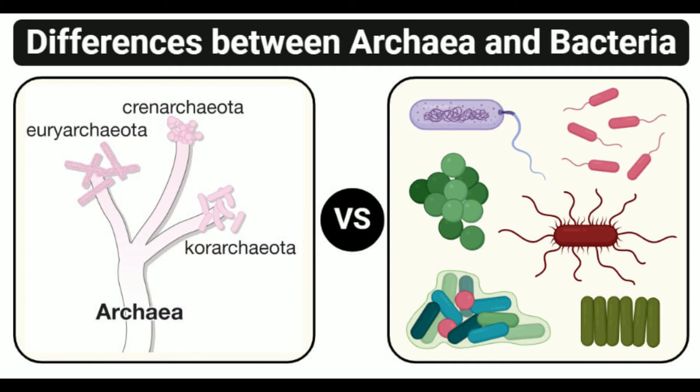RNA polymerase: RNA polymerase in archaea is complex, with more than eight polypeptides, and they may even have multiple RNA polymerases. Bacterial RNA polymerase is simple, with four polypeptides. Pathogenicity: Archaea are non-pathogenic, while bacteria may be pathogenic or non-pathogenic.